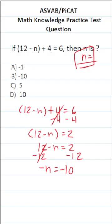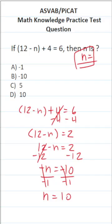To clear the negative in front of n, we're going to divide both sides of the equation by negative 1. A negative divided by a negative is a positive, so this becomes n. Negative 10 divided by negative 1 — again, a negative divided by a negative is a positive — so negative 10 divided by negative 1 is just 10.